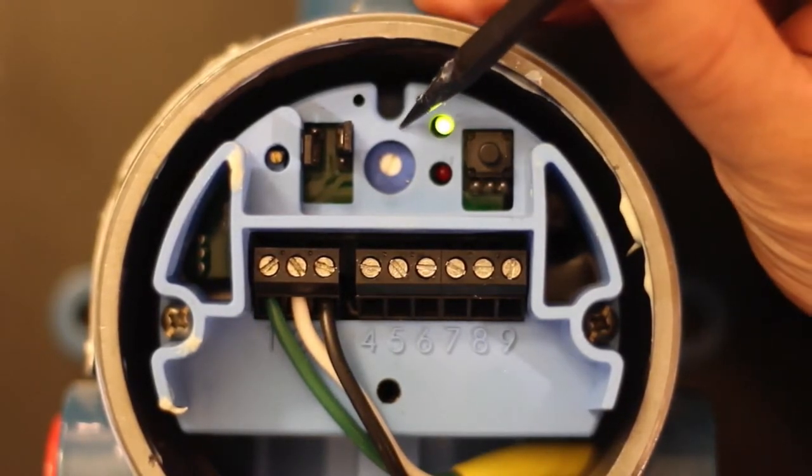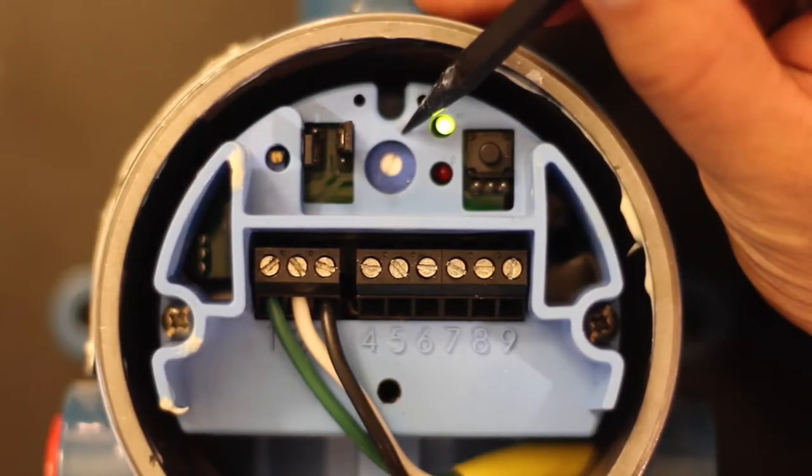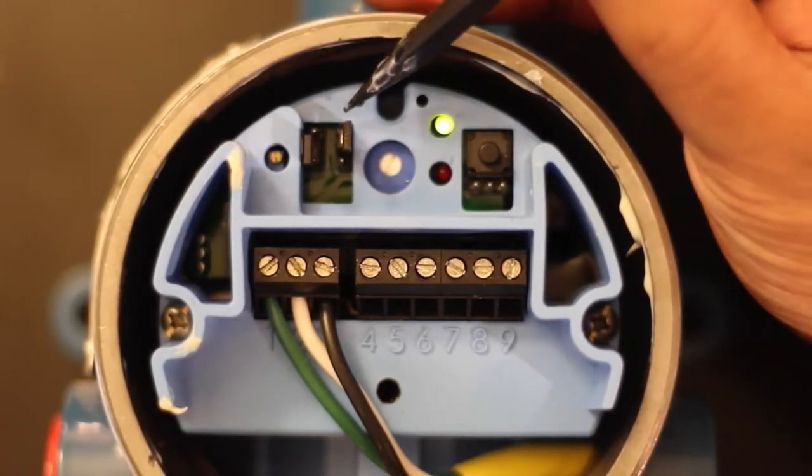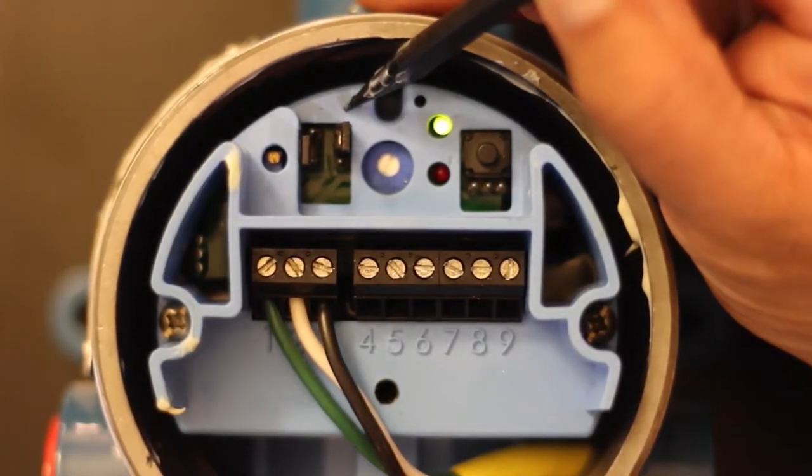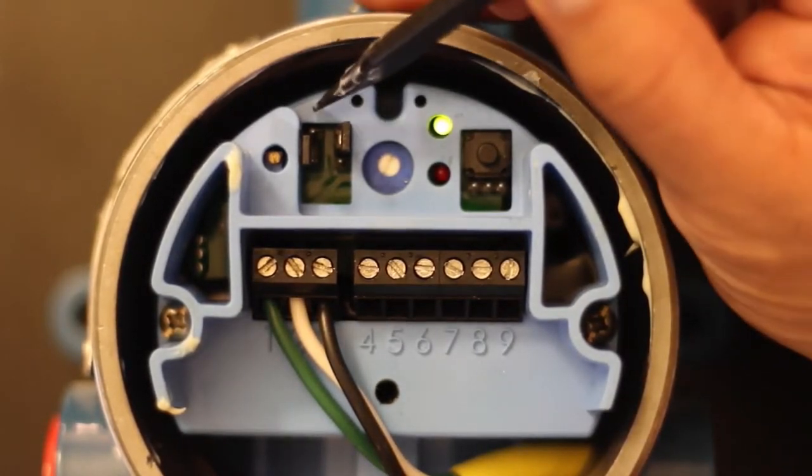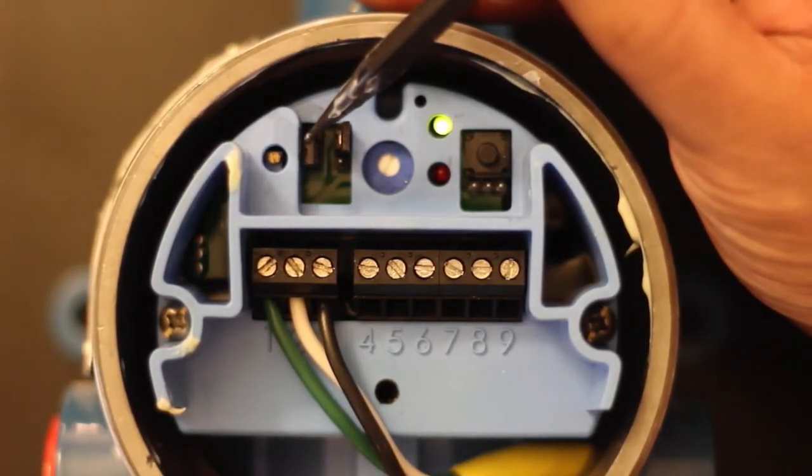In the middle, we have a zero to 60 second, 270 degree time delay pot. Moving over, we have our fail safe jumper to indicate high level or low level fail safe. Next up, you have your time delay jumper. This is for forward or reverse acting time delay.